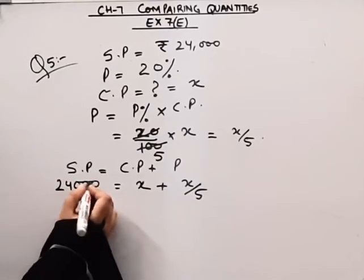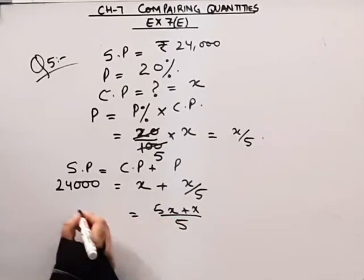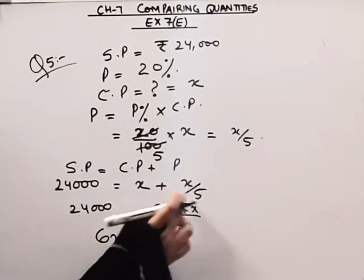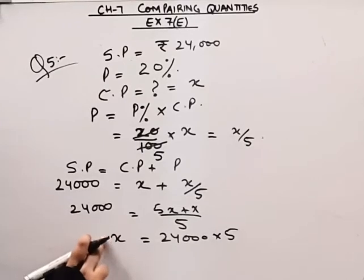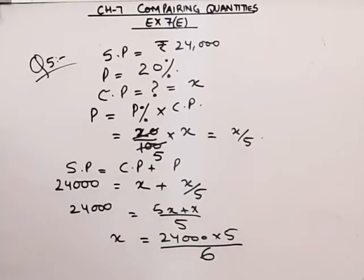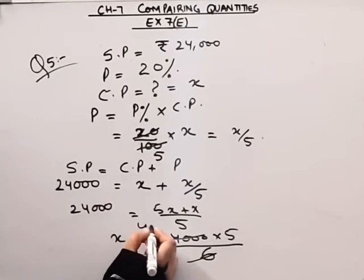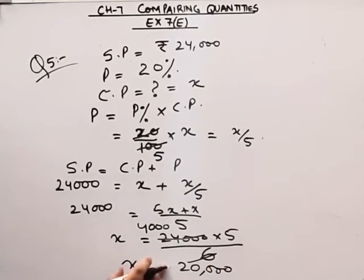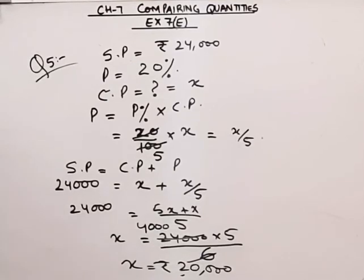The selling price is given as 24,000. So x plus x by 5 equals 24,000, which gives 6x by 5 equals 24,000. Therefore x equals 24,000 into 5 divided by 6, which means the cost price of that TV set is equal to 20,000. This completes question number 5. Thank you.